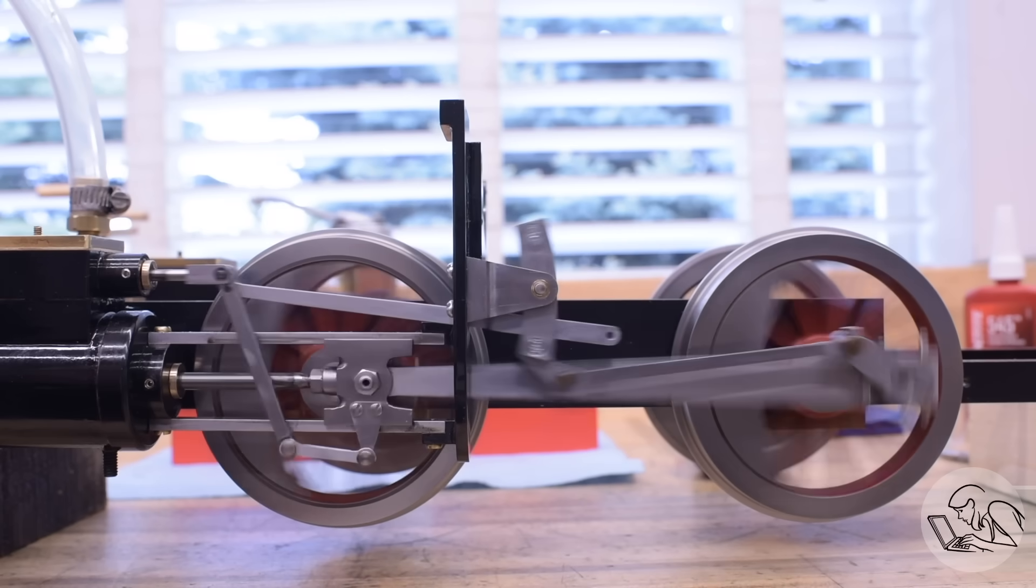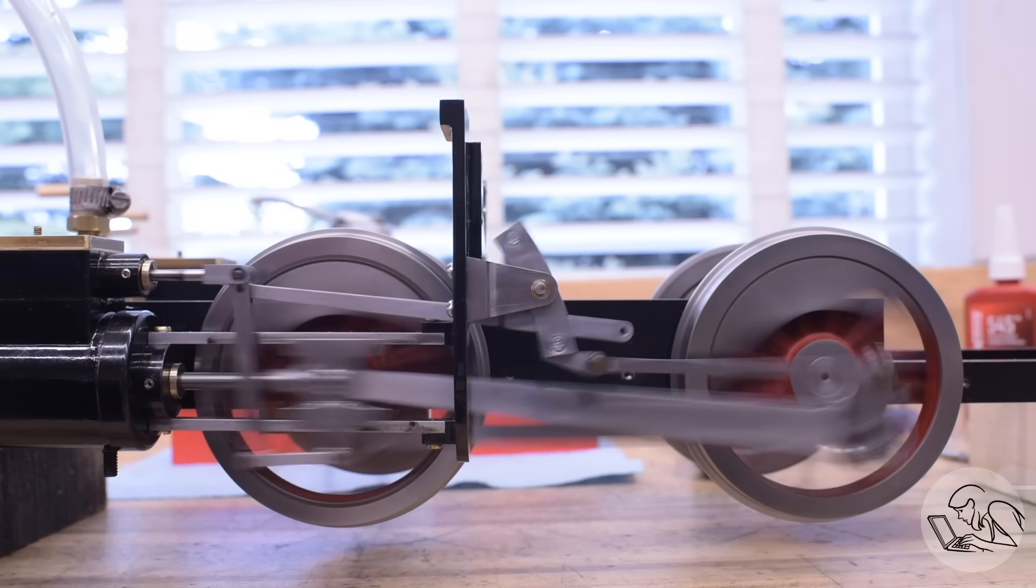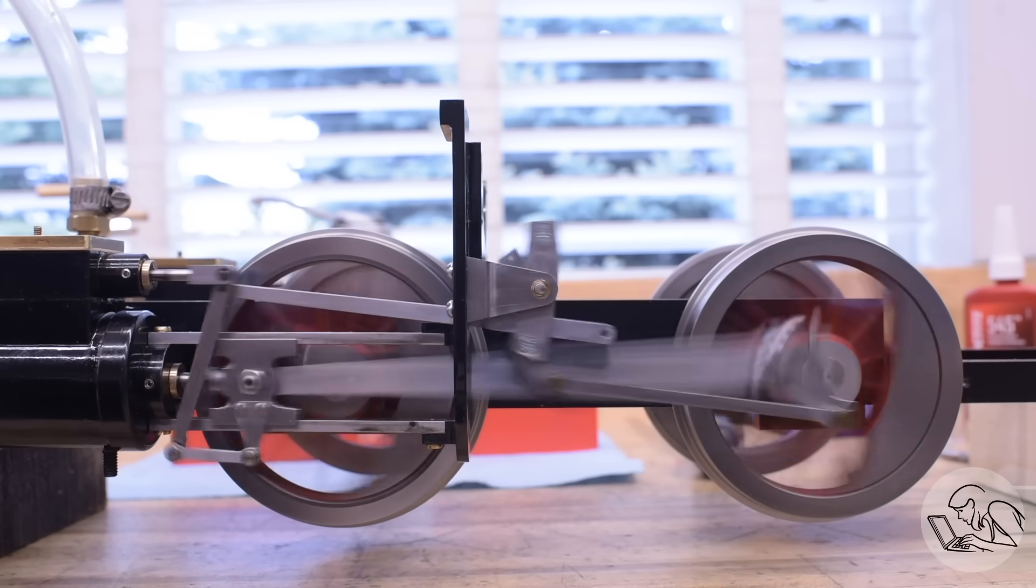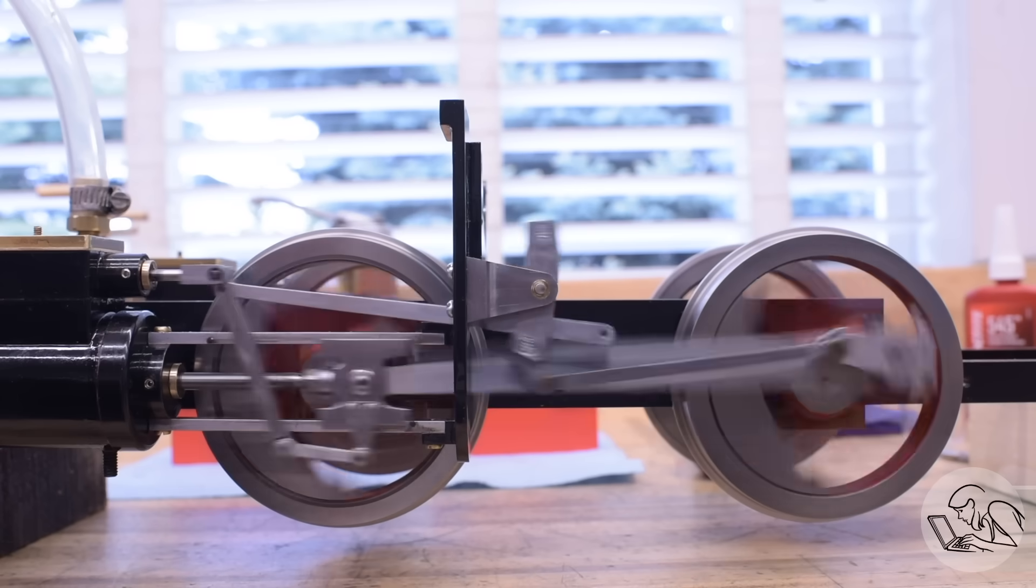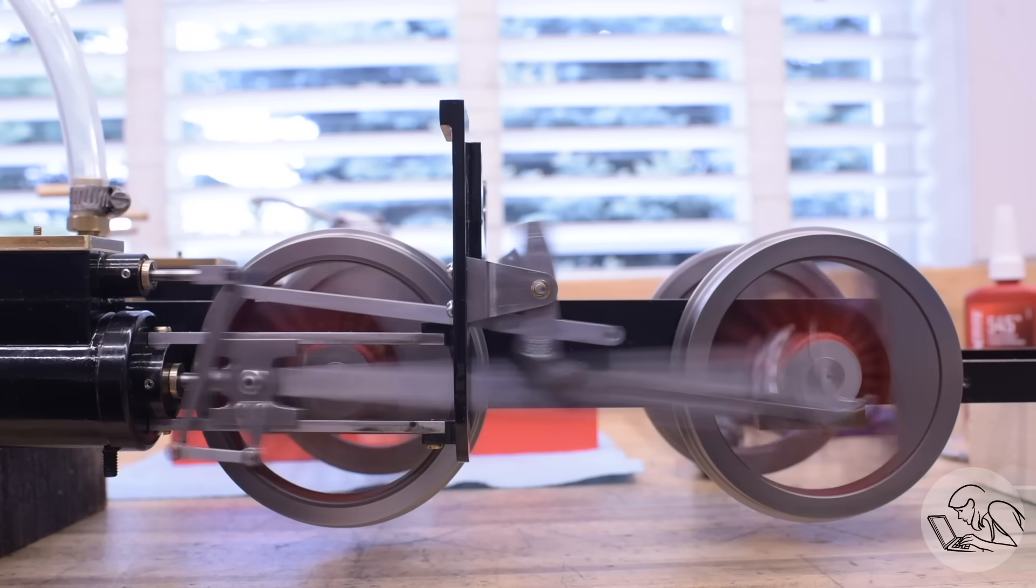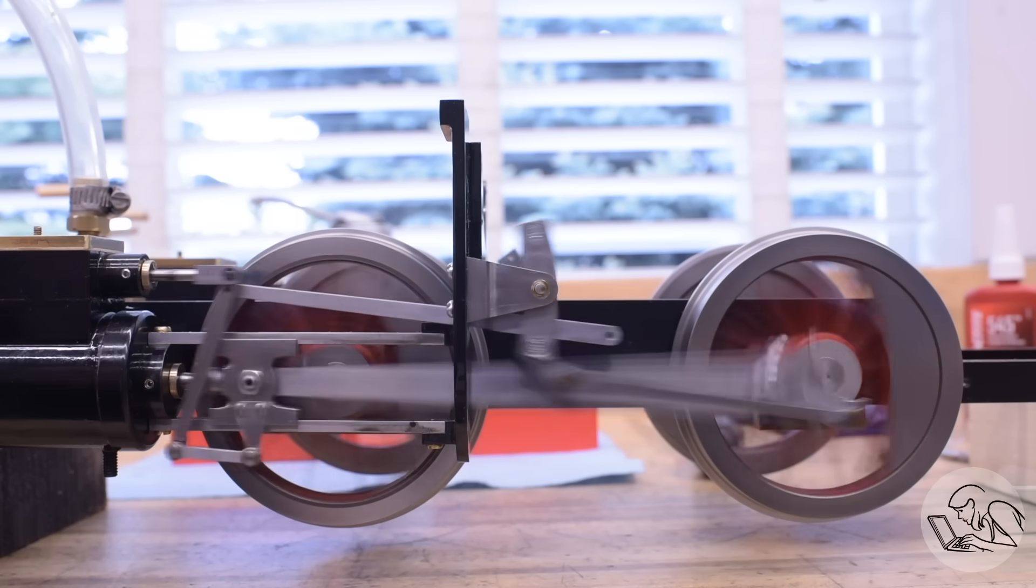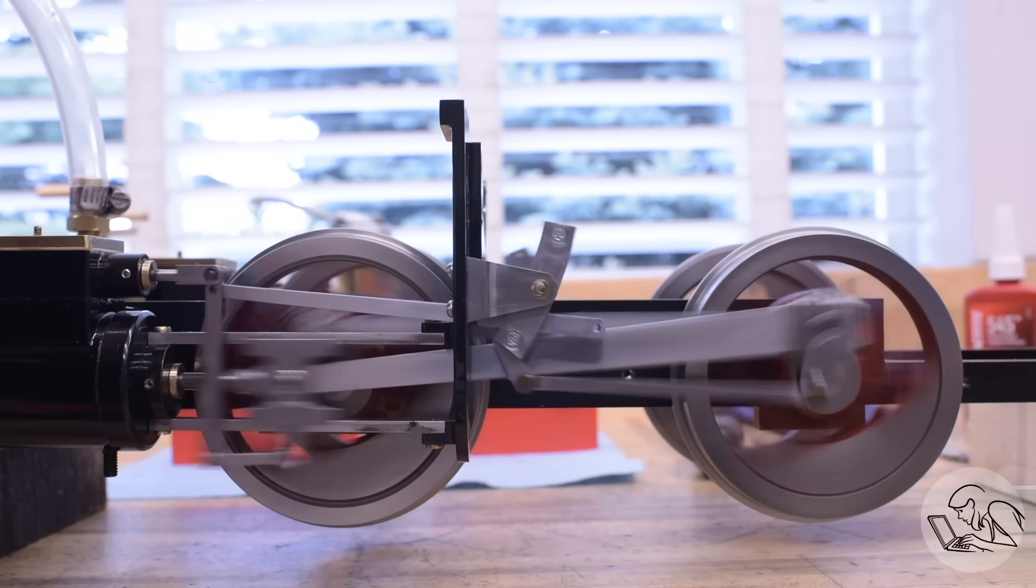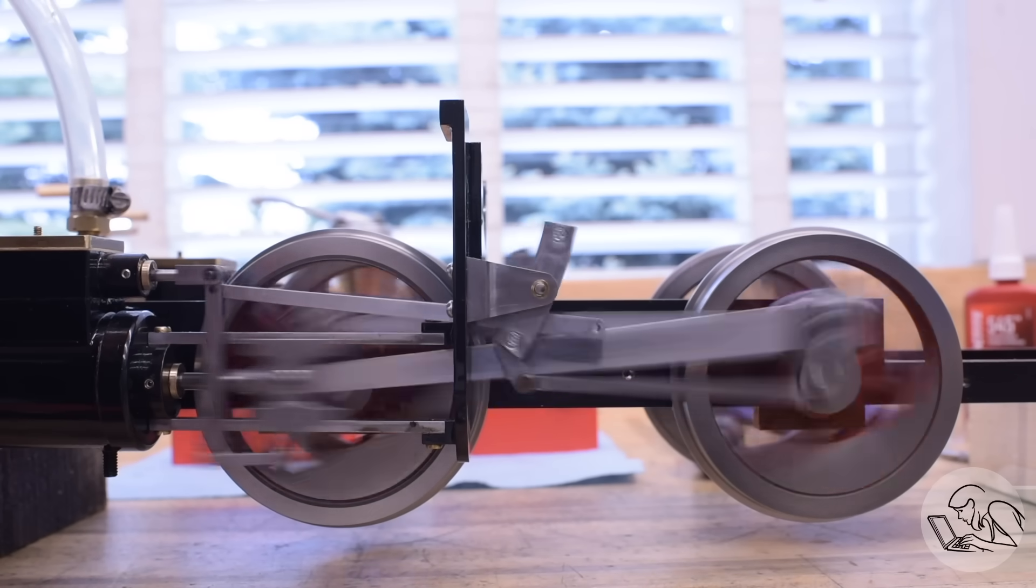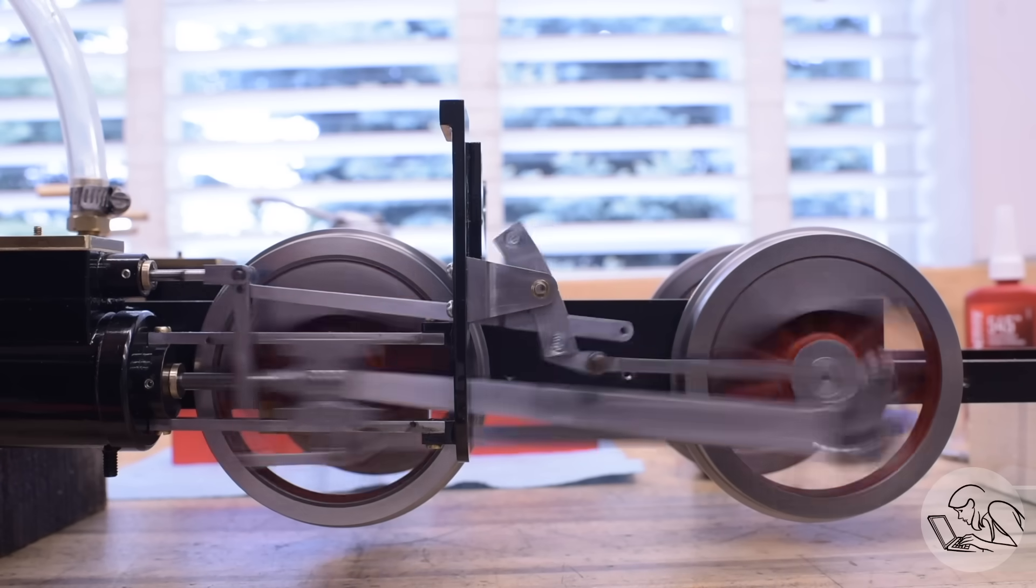And after that change, it's running much better. It's not perfect, at least to my ear, but it's definitely running a lot more square than it was. I believe that's probably as square as I can get it without modifying the valve. I suspect that one of my valves is not covering and uncovering the ports exactly the same as the other one. But that's pretty darn good, I think.